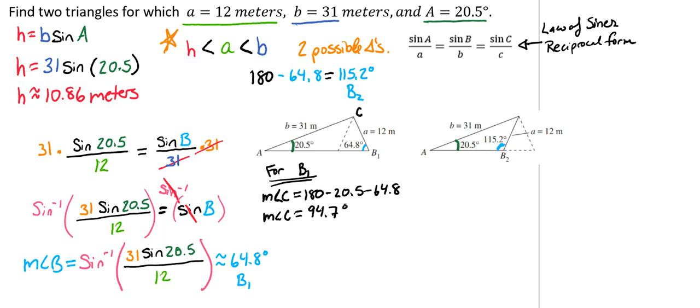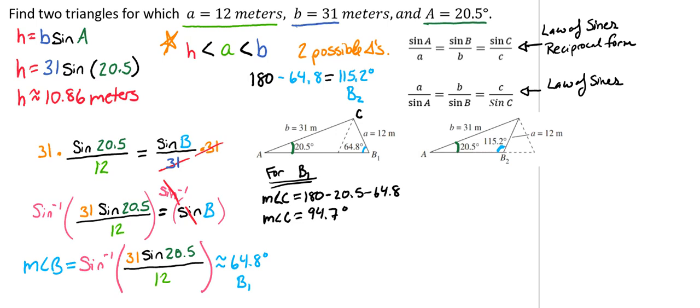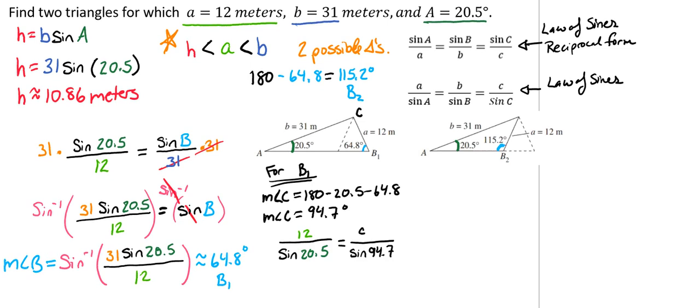And then if we use our law of sines to find that, and since we're going to be looking for C, we're going to use our original law of sines set up. So we have 12 over the sine of 20.5 equals C over the sine of 94.7. And so we're going to multiply both sides by the sine of 94.7 to get our C by itself. And so C is going to equal the sine of 94.7 times 12 over the sine of 20.5, which is going to come out to be approximately 34.15 meters. And so that's for B1.